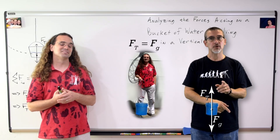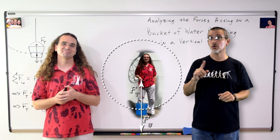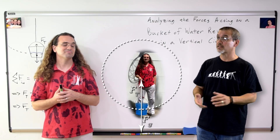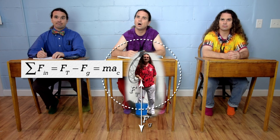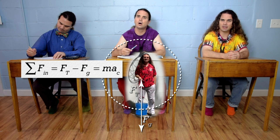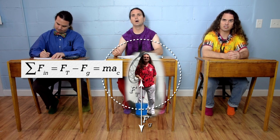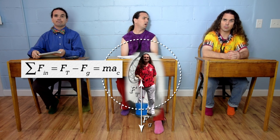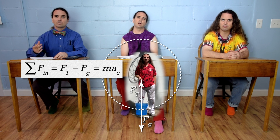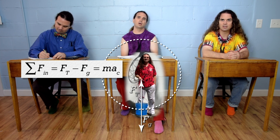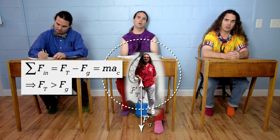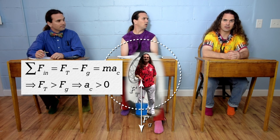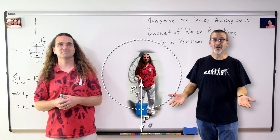But it is not moving in a straight line, it is continuing in a circle. Bo, can you explain why the force of tension must be greater than the force of gravity? In order for the bucket to move in a circle, there must be a centripetal acceleration acting inward. Because the centripetal force is the force of tension minus the force of gravity, the force of tension must be greater than the force of gravity to cause an inward centripetal force and therefore an inward centripetal acceleration.